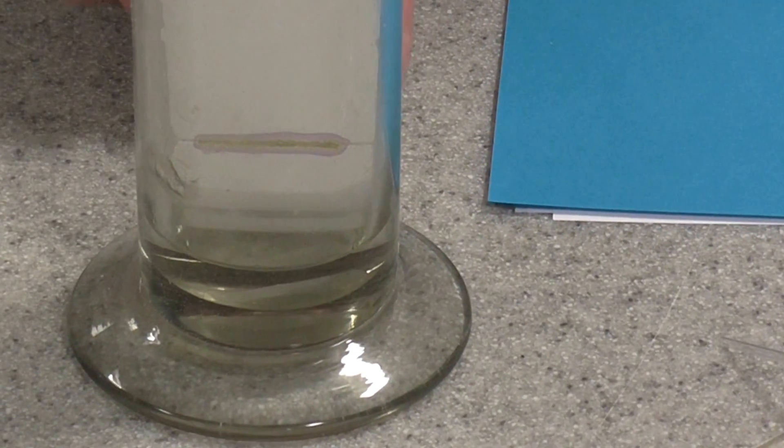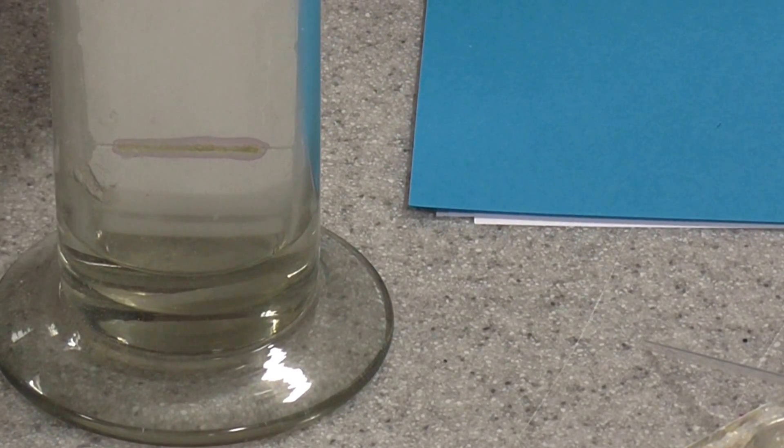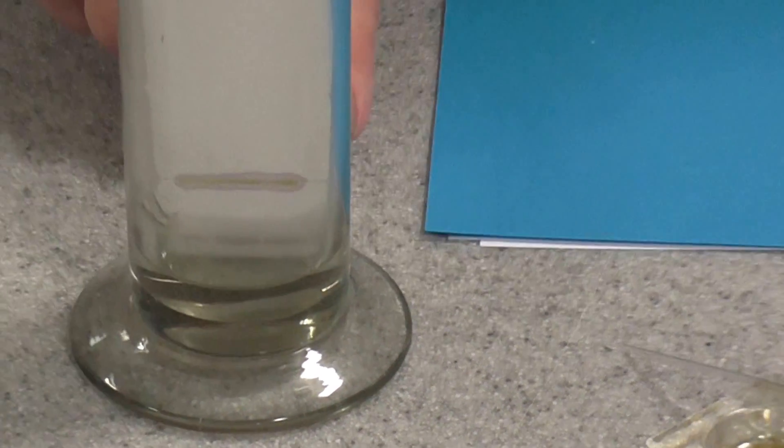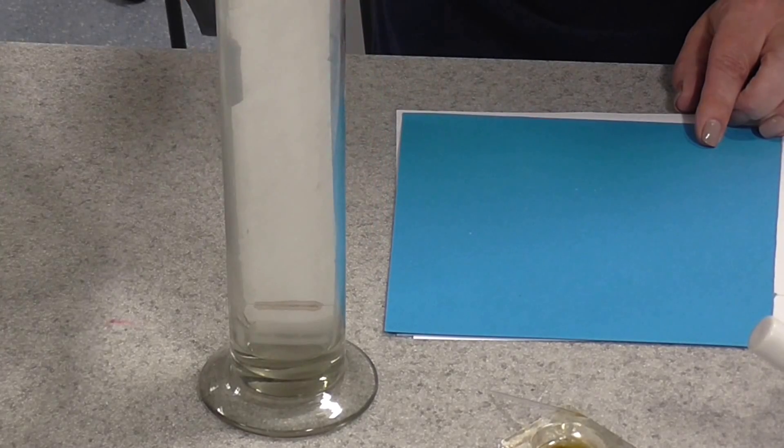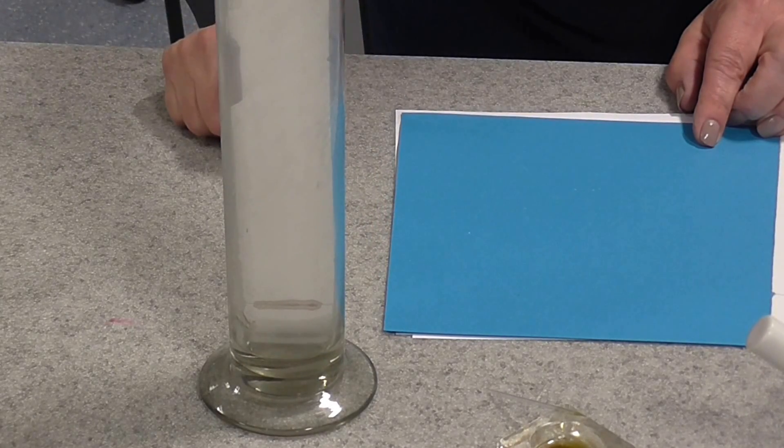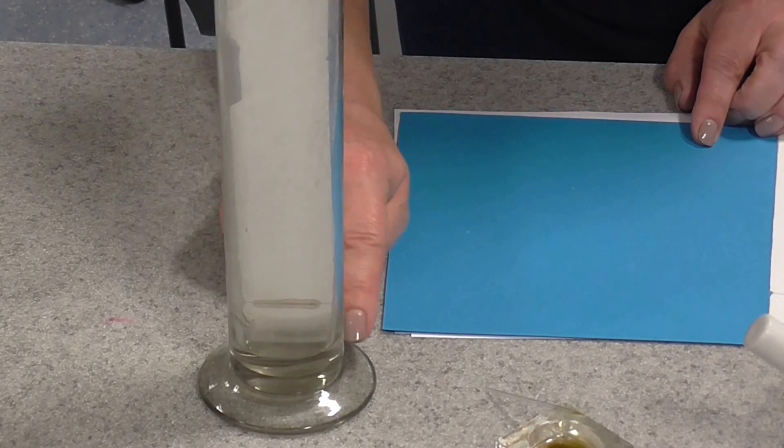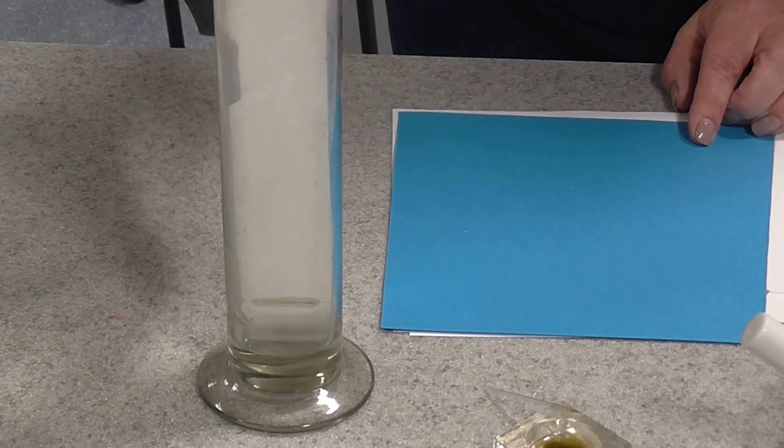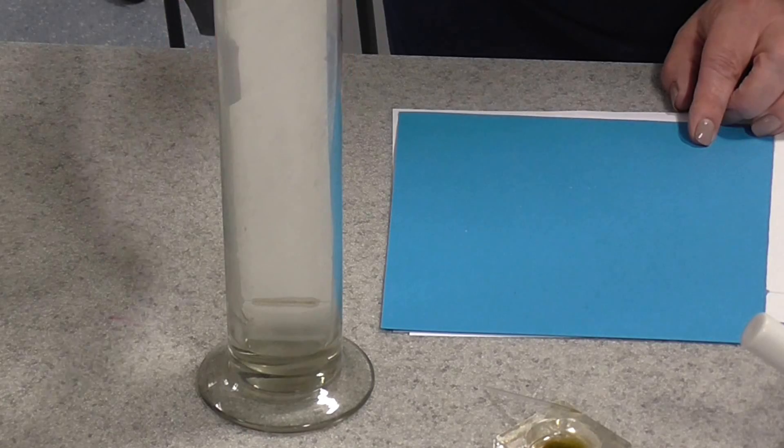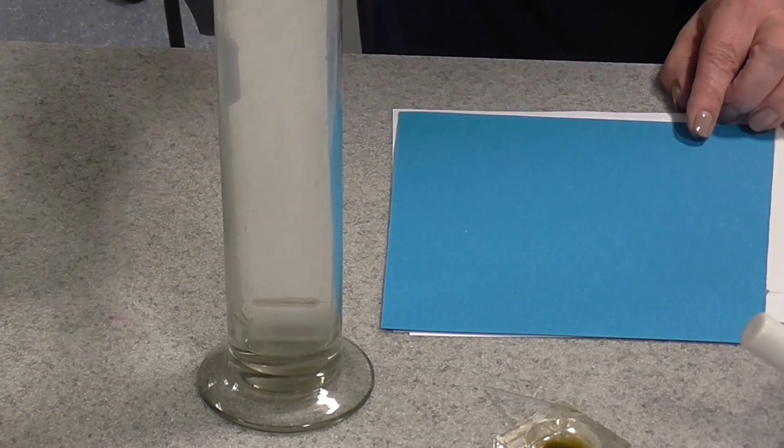And you're then going to leave that on the bench top and you're going to see the solvent slowly soak up the TLC plate and carry the pigments with it. So remember the TLC plate is what we call the stationary phase here. The mobile phase is our solvent, which is going to dissolve the pigments in the plant extract and carry them up the stationary phase, carry them up the TLC plate.